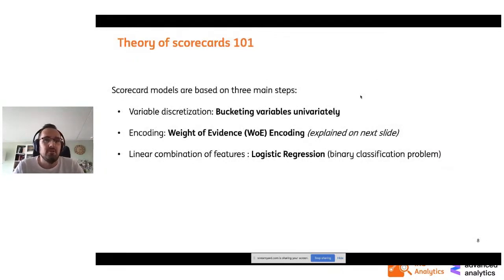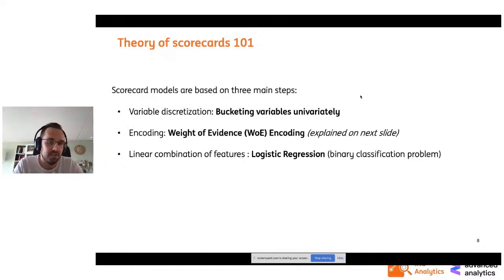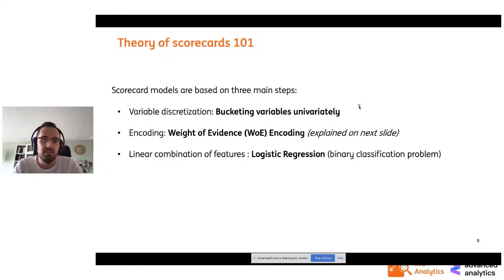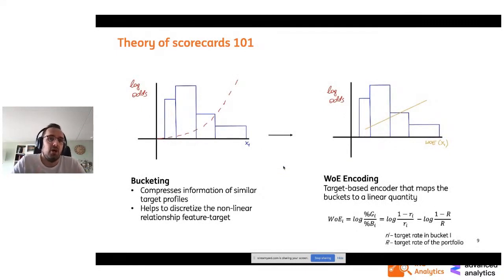Just two slides on the theory behind scorecards. There are three main steps: first, variable discretization — the bucketing — which is done univariately and is very manual-intensive, and that's where most of the automation comes in. Second, encoding — specifically weight of evidence encoding, which is explained on the next slide. Third, once you do these two steps, you build logistic regression on top. These steps are nothing more than scikit-learn transformers; you put them in a model and get a scikit-learn pipeline that works amazingly well.